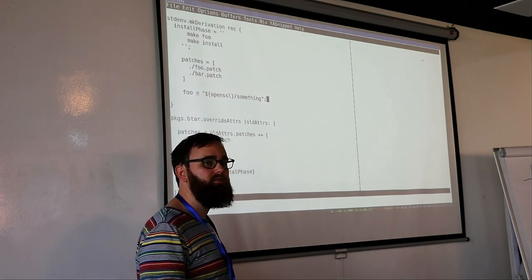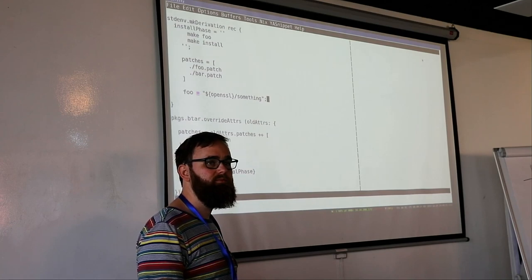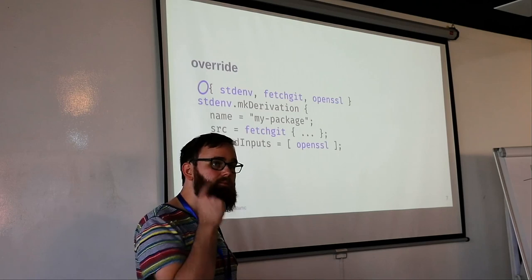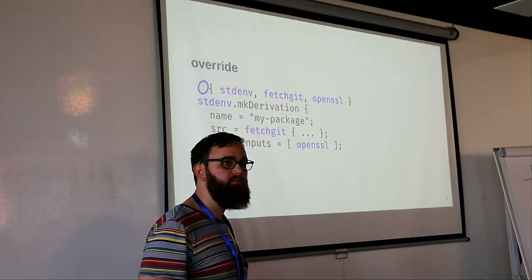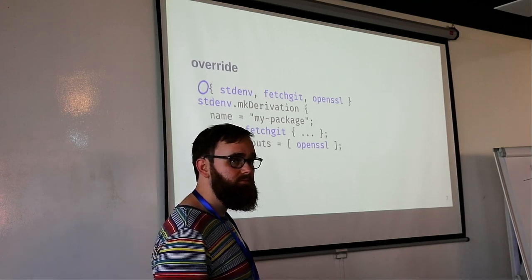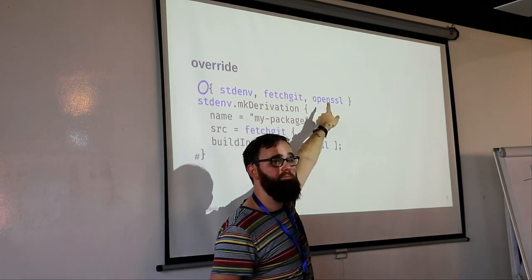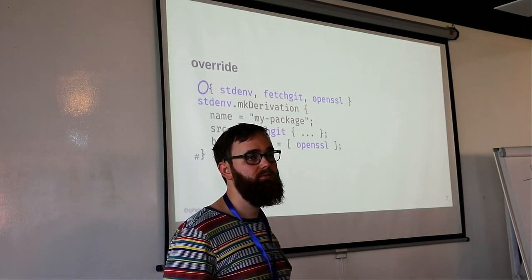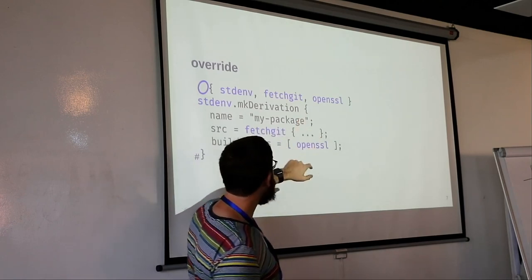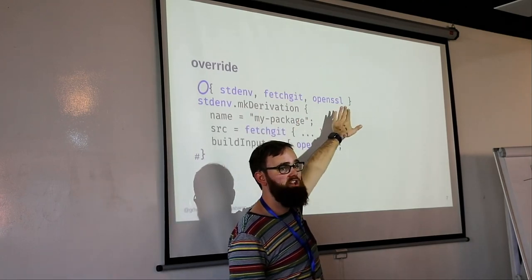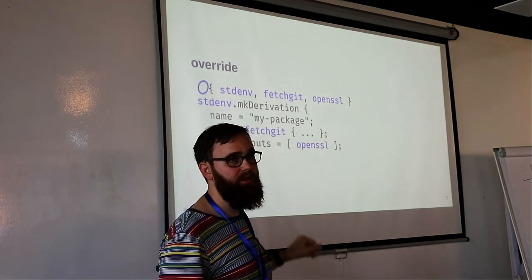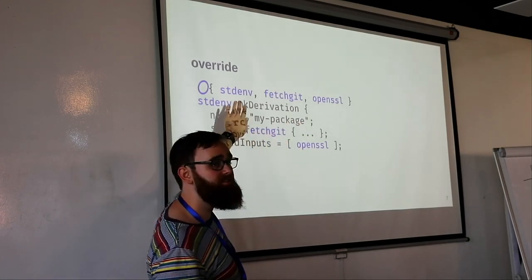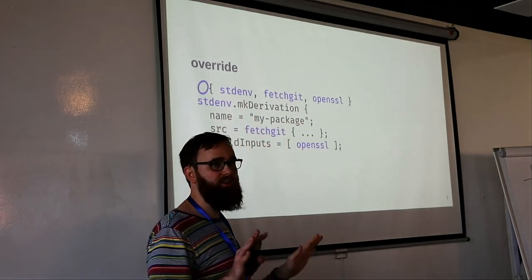To clarify scope: `.override` can override these parameters at the top of the function — that's it. So in this example, if you're passing in openssl, you can change which openssl is being passed in. But in terms of what's inside the attribute set passed to mkDerivation, you don't have any control over that with `.override`. One common thing to do is combine both — use `.override` and `.overrideAttrs` together so you get both behaviors.